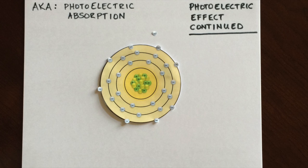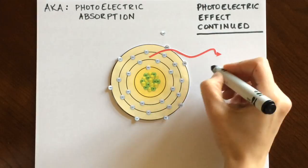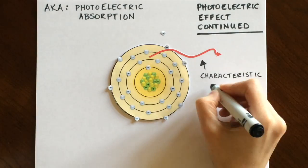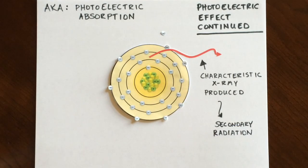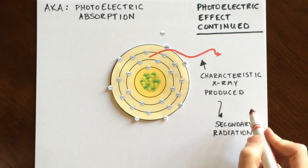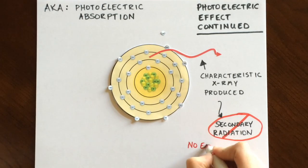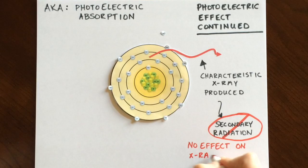If you recall from previous discussions in class, characteristic x-rays are emitted when an outer shell electron fills an inner shell void. Since this can happen following an ejection of an inner shell electron during photoelectric absorption, these characteristic x-rays are referred to as secondary radiation and act much like scatter radiation. These low energy x-rays do not exit the patient and have no effect on x-ray images.